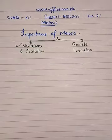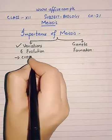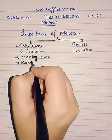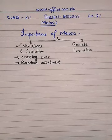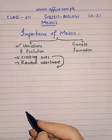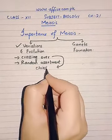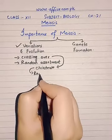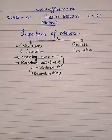Let us discuss variation and evolution. During meiosis, two important phenomena take place: crossing over and random assortment, meaning the chromosomes are separated randomly. During crossing over, the parental chromosomes exchange their segments — we call that exchange of segments a chiasmata. Chiasmata occur, and this exchange of segments results in a large number of recombinations, meaning the genetic material will recombine and more and more combinations will be formed.